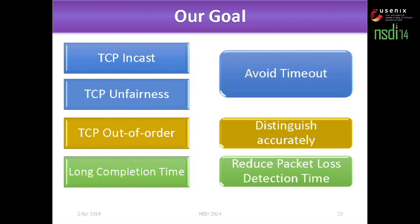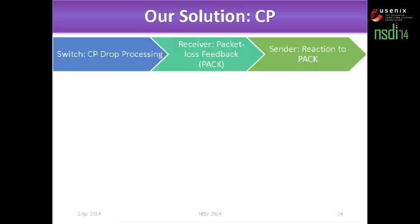Depending on these four TCP problems, we can conclude our goals. There are three: the first is to avoid TCP timeout; the second is to distinguish which packet is out of order or lost accurately; and the third is to reduce the packet loss detection time.